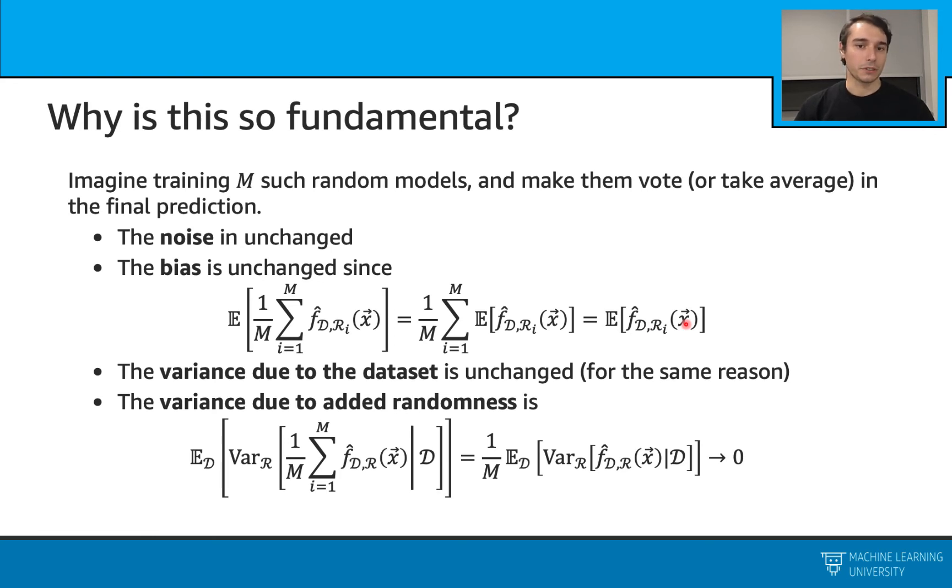And variance due to the dataset doesn't change because the expected value doesn't change. But the variance due to the added randomness is quite interesting in this case. So if we put that term here and go through the derivation, you can see that we have this one over m times this expected value. If m is large enough, we can see that this becomes quite a small number.